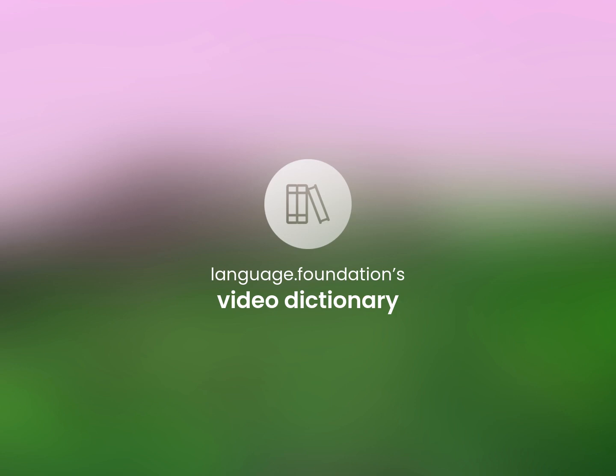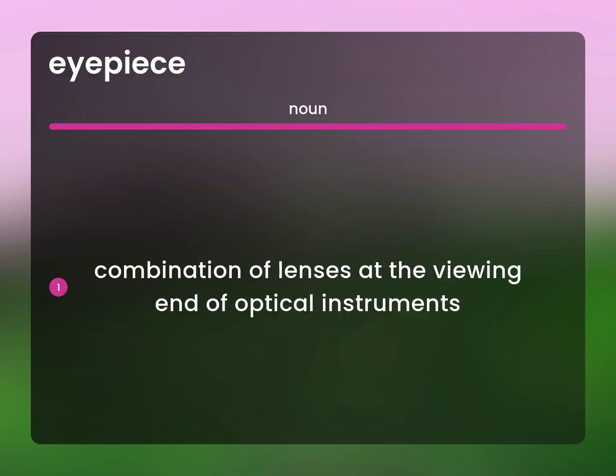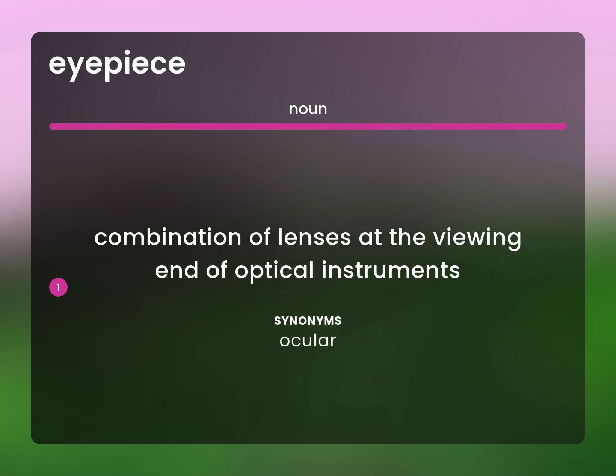Language.Foundation's Video Dictionary — helping you achieve understanding. Ocular: a combination of lenses at the viewing end of optical instruments.